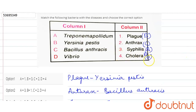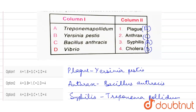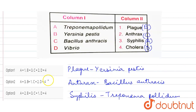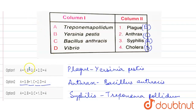So if we match: A matches 3, B matches 1, C matches 2, D matches 4. The correct answer is option 2.